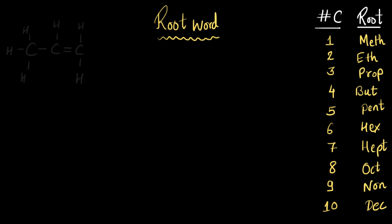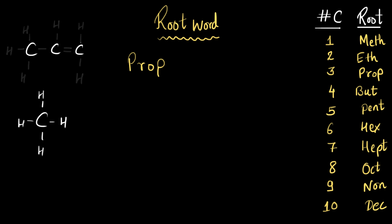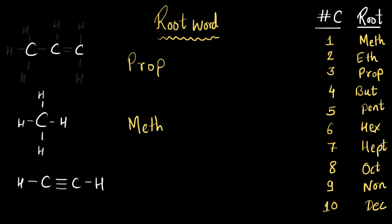For example, for this molecule, I focus only on the carbon atoms and see there are three carbon atoms — so I use the root word 'prop'. Here's another example: this one has only one carbon atom, so we use the root word 'meth'. And for this next example, there are only two carbon atoms present, so we use the root word 'eth'.